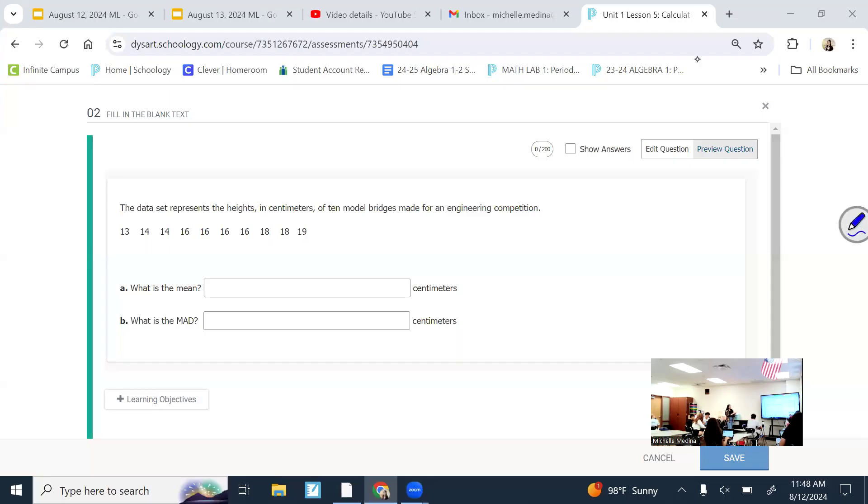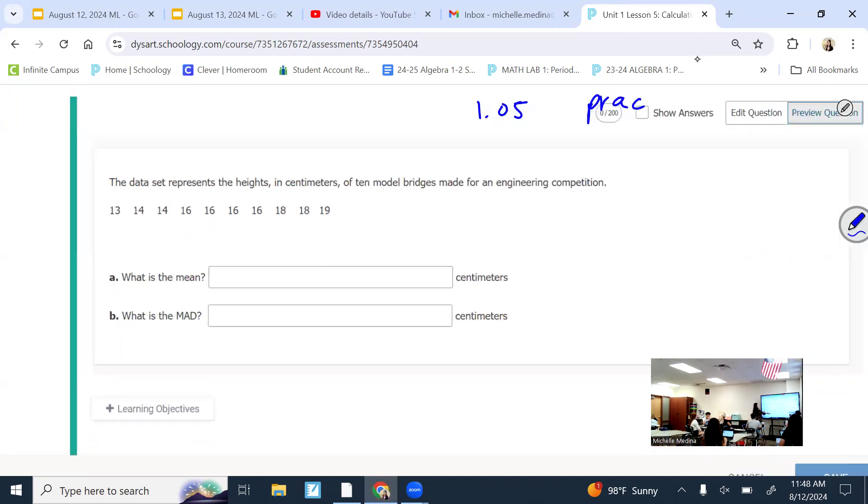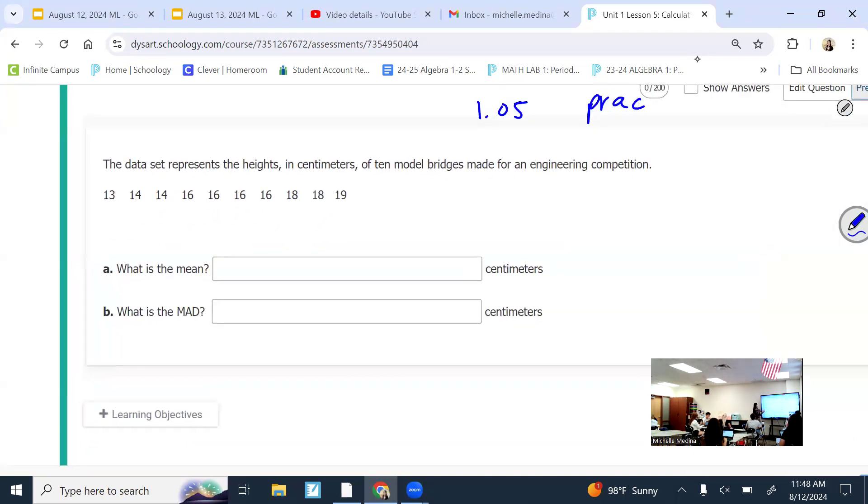So, the Unit 1 Lesson 5 practice is what I'm looking at. It might not be your number 2 question because I think this one is jumbled. But you all have a question that talks about the data set represents the heights in centimeters of 10 model buildings or bridges made for an engineering competition.